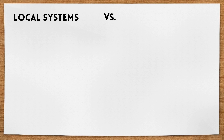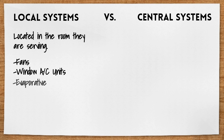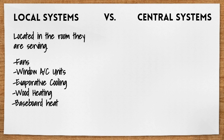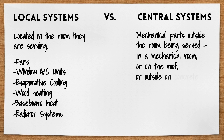We have to start off by discussing local and central systems. Local systems are those that are located in the room or space they are serving, such as fans, window AC units, evaporative cooling systems, wood heating devices, baseboard heat, or radiator systems. Central systems have all of the mechanical parts outside of the rooms they are serving, typically in a mechanical room, on the roof, or outside the building on a concrete slab. The conditioned air is then distributed and delivered to the rooms being served.